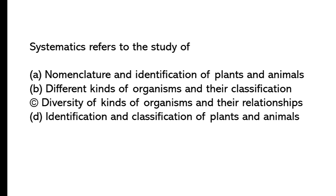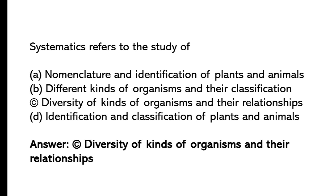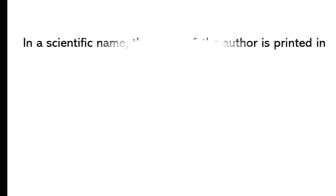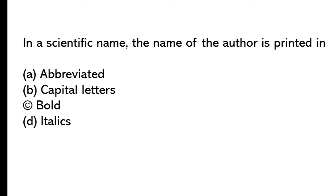Systematics refers to the study of: So the correct answer is option C, Diversity of kinds of organism and their relationships. In a scientific name, the name of the author is printed in: Abbreviated, capital letters, bold, italics. So the correct answer is option A, Abbreviated.